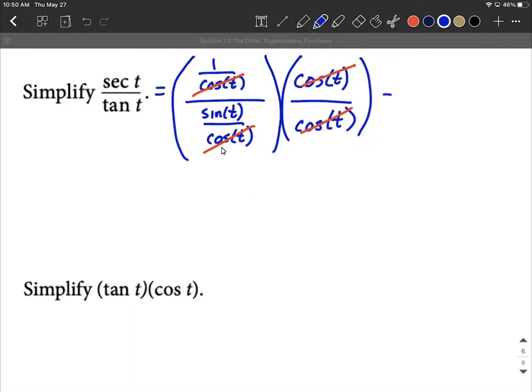So what are we left with? Well we have a one in our numerator and then in our denominator we're only left with the sine of t.